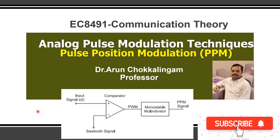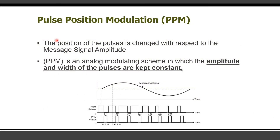Hello everyone, today we are going to discuss pulse position modulation, which is one of the types of analog pulse modulation techniques. In this video, we are going to discuss how to generate a pulse position modulated signal and also how to demodulate it to extract the original message signal. In pulse position modulation, the position of the pulses changes with respect to the message signal amplitude.